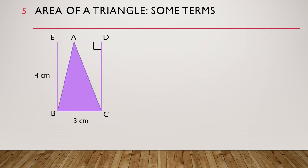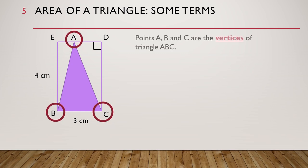Now we are going to introduce some terms that we will use for the rest of this video. Points A, B, and C are known as the vertices of triangle ABC. The word 'vertices' is the plural form; the singular form is 'vertex'. So we say one vertex but many vertices.